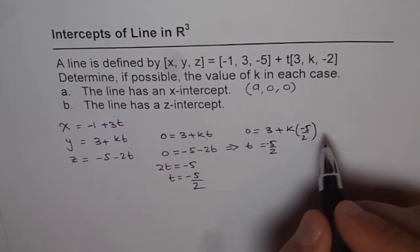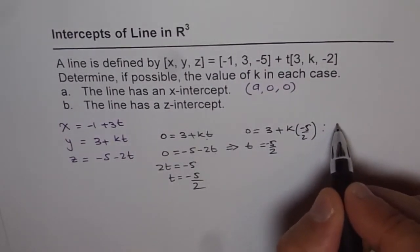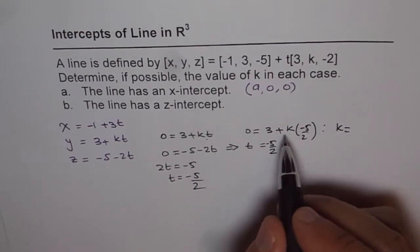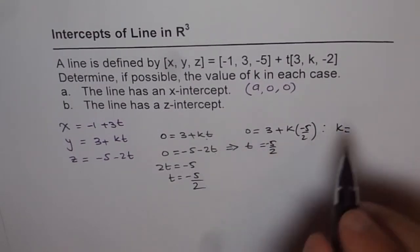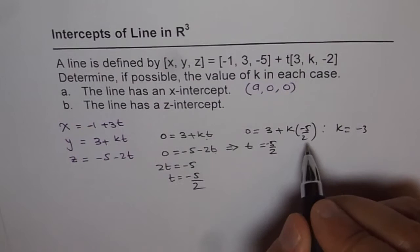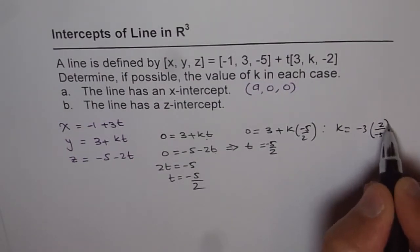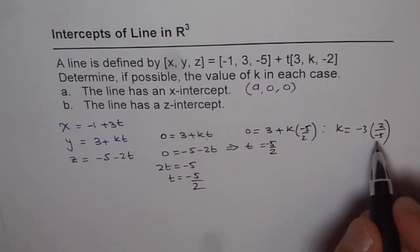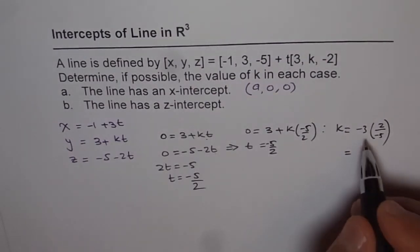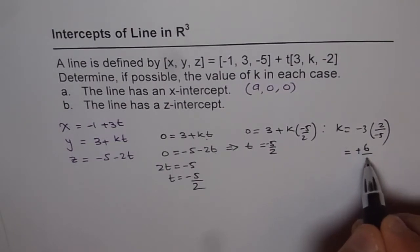So we get k times -5/2. And therefore, from here, we can get k equals to... we will take 3 on this side. So -3 times 2 over -5. That gives us a value of k, which is minus and minus becomes plus 6/5.